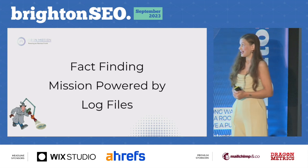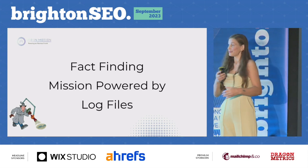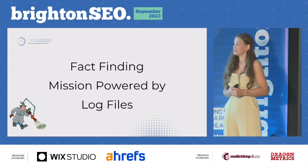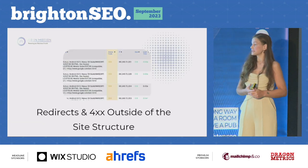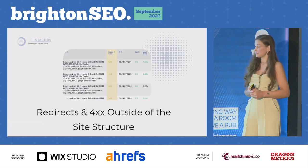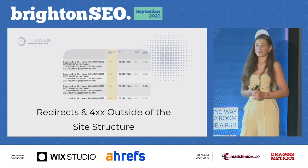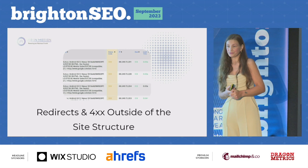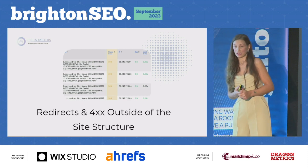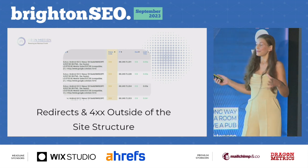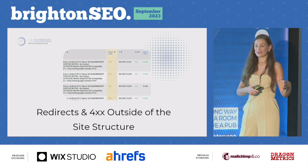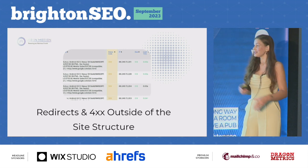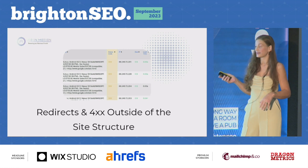There are also a few things outside of that strategy to look for. This can include redirects and 404s outside of the site structure — things you won't pick up on a crawl. They might be flagged in Google Search Console, but you're not sure if Google's actually still crawling them. Log file analysis can be really useful in highlighting whether it is an issue for you.